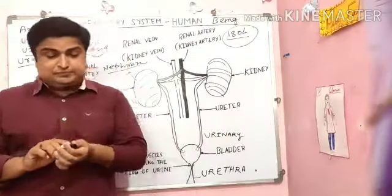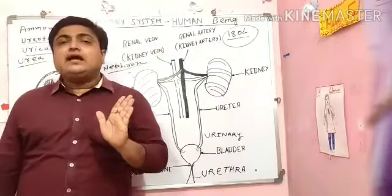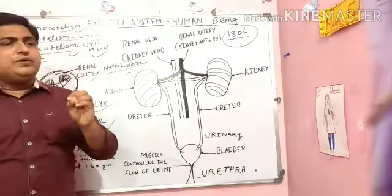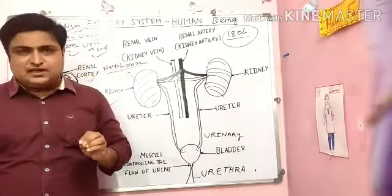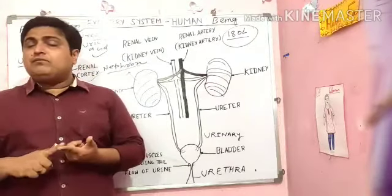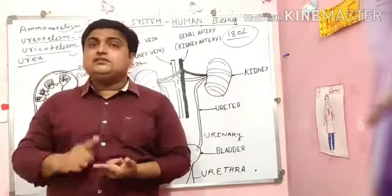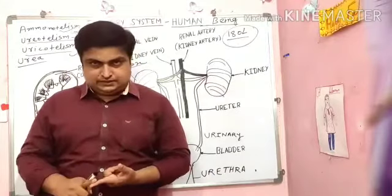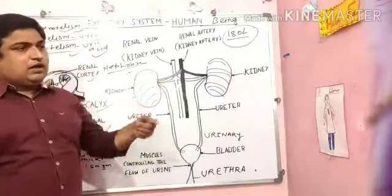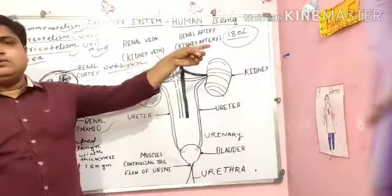To conclude, the function of the excretory system is the excretion of waste substances and urea from our body. Urea comes from protein substances and is therefore called nitrogenous waste. It is very toxic and dangerous to our organs, so it is removed through the excretory system.